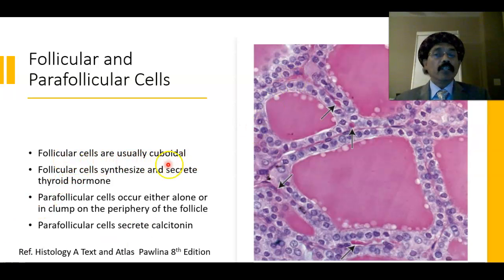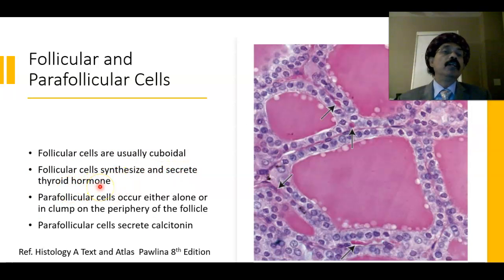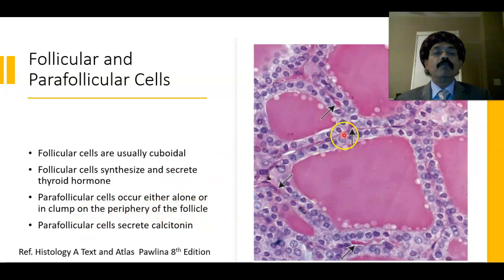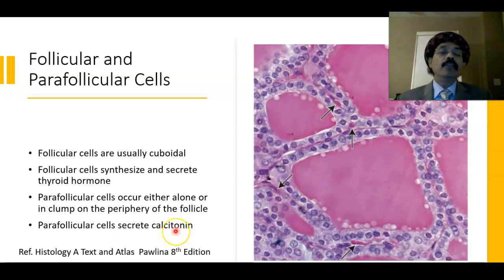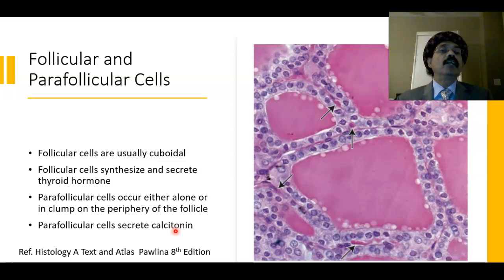Follicular cells are usually cuboidal and synthesize and secrete thyroid hormones T3 and T4. Parafollicular cells occur alone or in clusters at the periphery of the follicle. Parafollicular cells secrete calcitonin, also called thyrocalcitonin, which controls blood calcium level — it decreases blood calcium by inhibiting osteoclast cells and inhibiting reabsorption of calcium from the ultrafiltrate of the kidney.